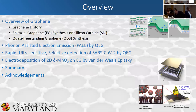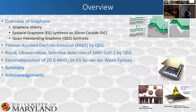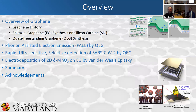Just an overview: we'll talk about graphene history, epitaxial graphene synthesized on silicon carbide, and then what the title of the talk is about — quasi-freestanding epitaxial graphene, or freestanding graphene on silicon carbide. Two big topics for graphene are phonon-assisted electron emission, which allows us to emit electrons at much lower energies than thermionic or field emission sources, and SARS-CoV-2 detection using quasi-freestanding epitaxial graphene. Lastly, the electrodeposition of transition metal oxides, in particular delta-phase manganese dioxide grown by van der Waals epitaxy — an electrochemical process where we can grow 50 nanometers of this material in about a second.